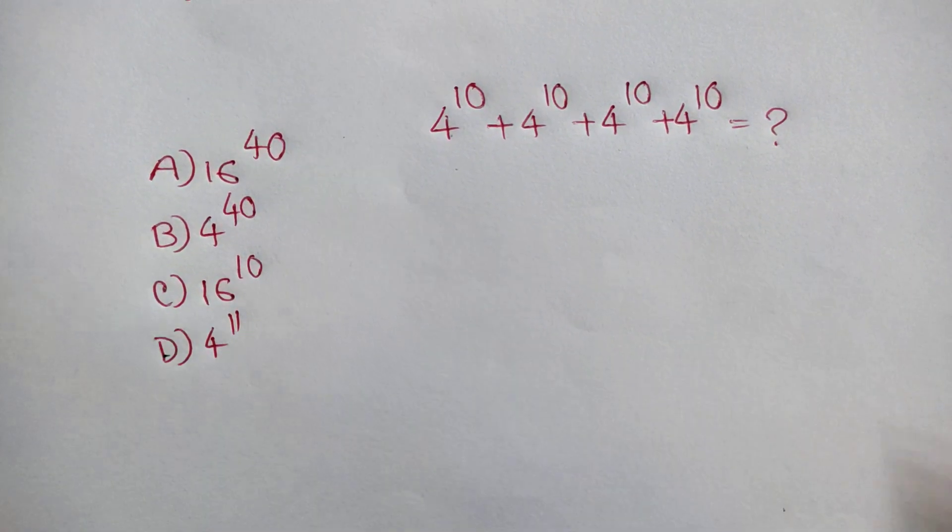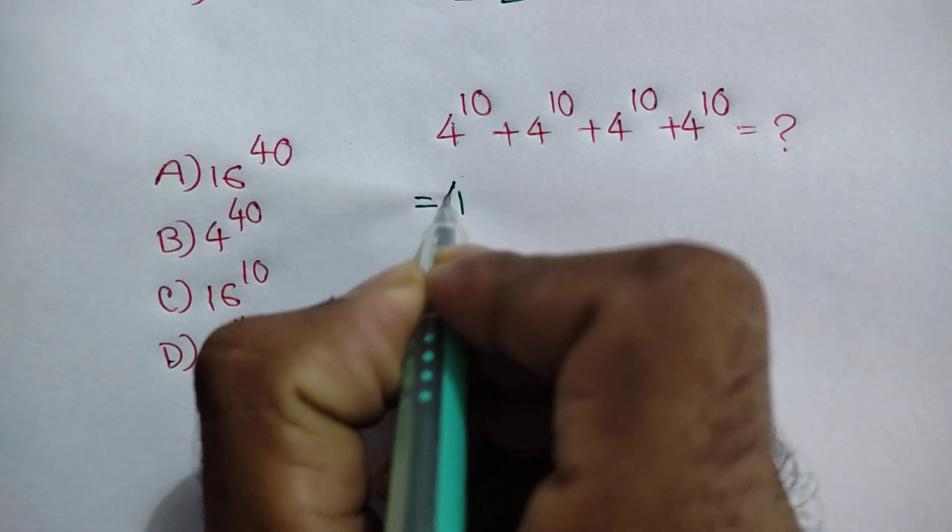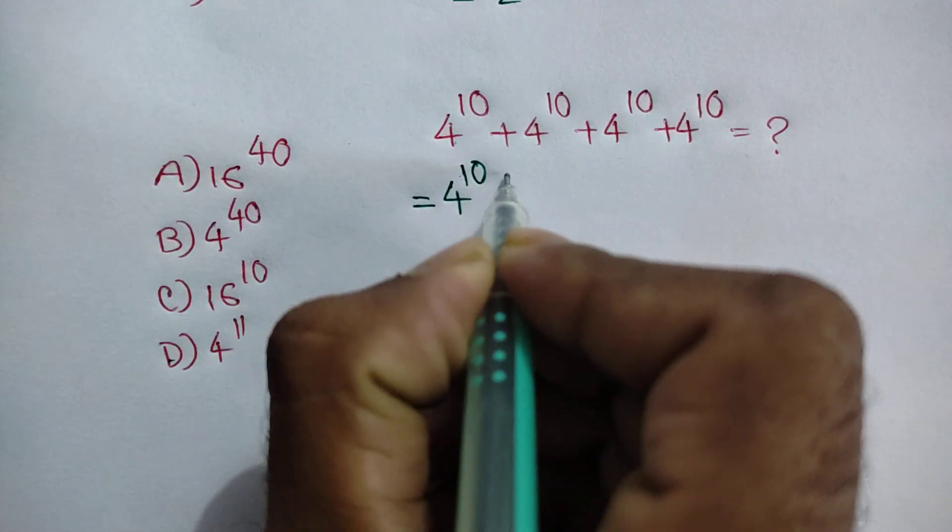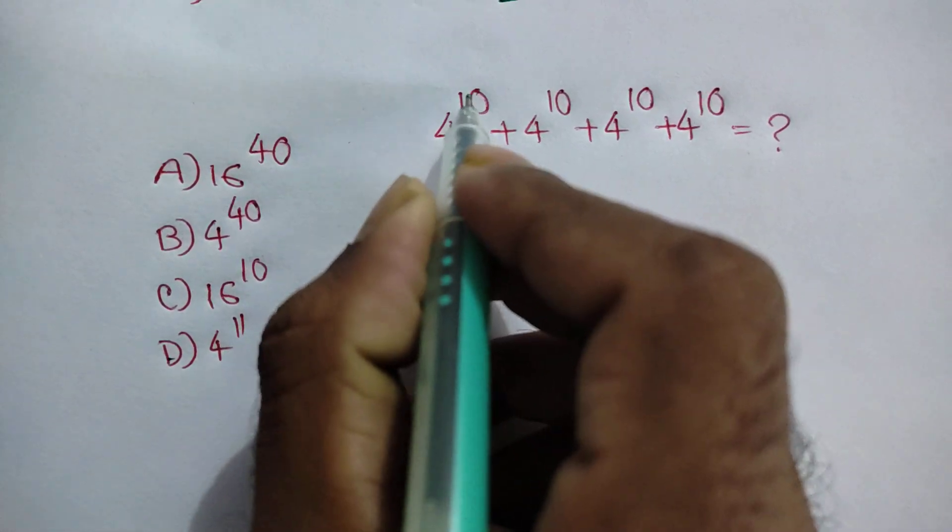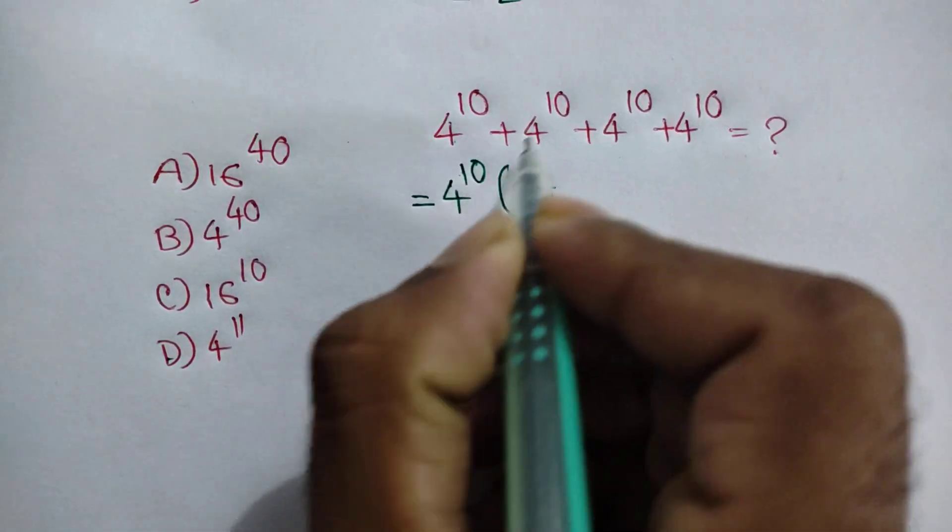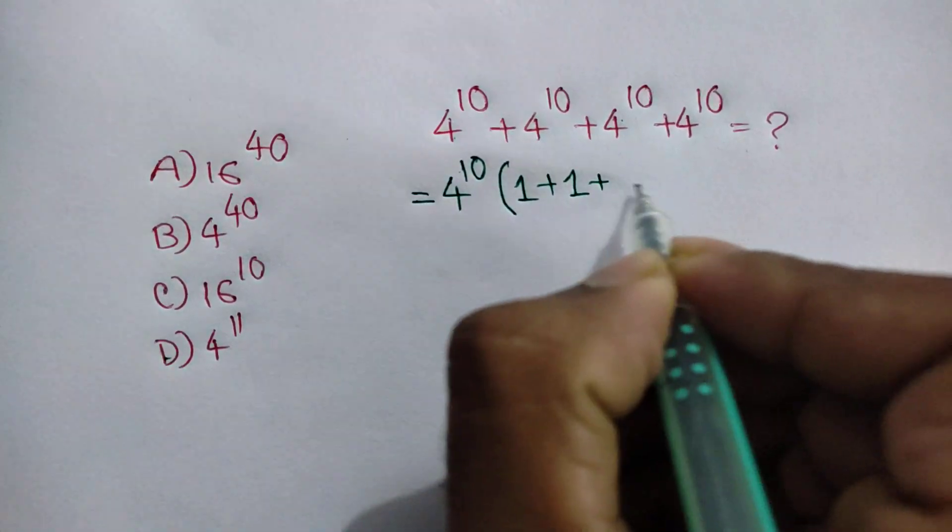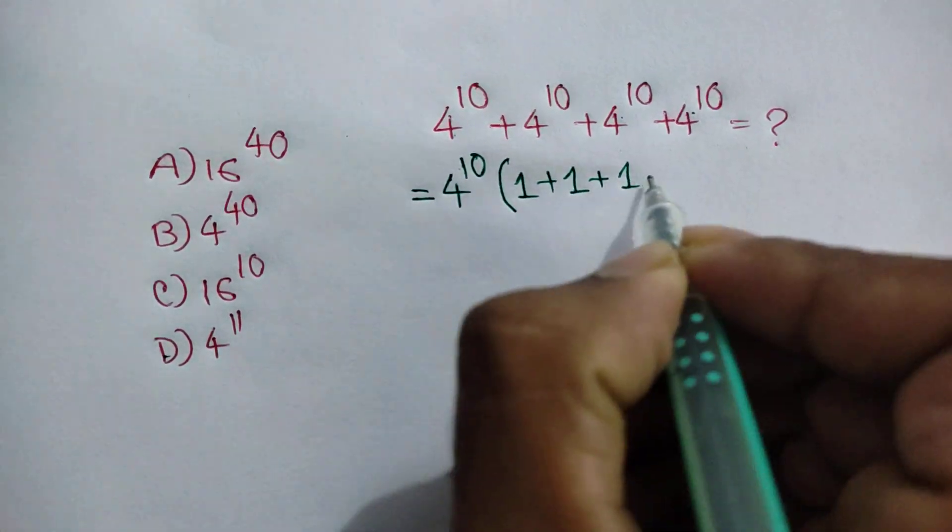In here, at first we can take common 4 power 10. So we can write 4 power 10 times, and this divided by this equals 1, plus this divided by this 1, plus this divided by this 1, plus this divided by this 1.